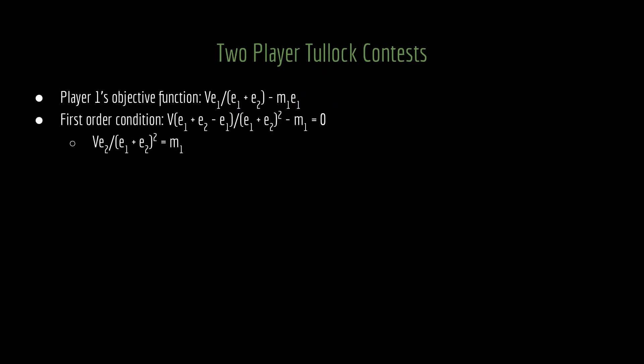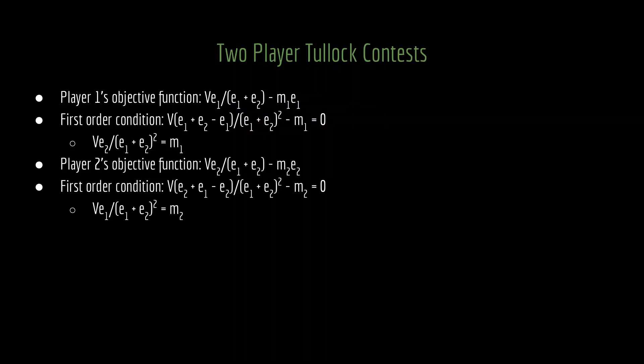Like before, to find player 1's optimal amount of effort, we take the first order condition of that top line. In other words, we take the derivative with respect to E1, because that's the thing that player 1 controls, and set it equal to zero. If we do that, and do a little bit of rearranging, we get v times E2 divided by the sum of E1 and E2 squared equal to M1. Of course, we can do the same thing for player 2 by just flip-flopping all of the 1's and 2's all along the way, and we get v times E1 divided by the sum of efforts squared equal to M2.